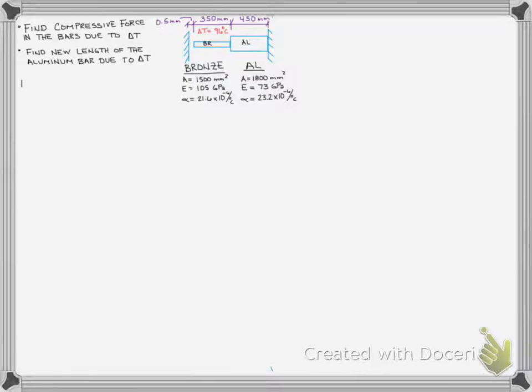And so if we look at this problem, what we have is a member made of two materials. It has a 350mm section that is bronze and a 450mm section that is aluminum. And the aluminum end happens to be fixed to the wall, so we're fixed on the right side. On the left side at the bronze free end, we actually don't quite make it to the wall and we have a half a millimeter gap. The problem is this system now experiences a 96 degree Celsius temperature increase.